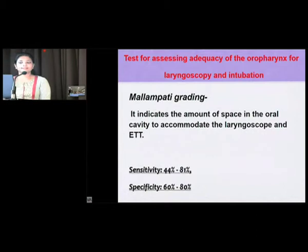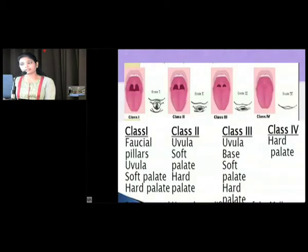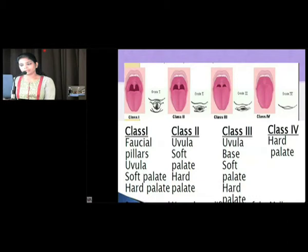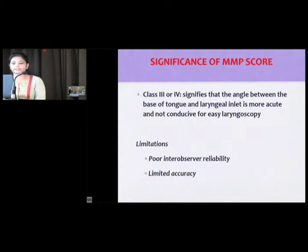For assessing the adequacy of the oropharynx, the most widely used test is Mallampati grading, which indicates the amount of space in the oral cavity to accommodate laryngoscopy and intubation. It has sensitivity of 40–80% and specificity of 60–80%, and has four classes. In class 3, only the uvula base, soft and hard palate are visible; in class 4, only the hard palate is visible. Classes 3 and 4 are predictors of difficult laryngoscopy and intubation. A limitation of Mallampati grading is poor interobserver reliability and limited accuracy.